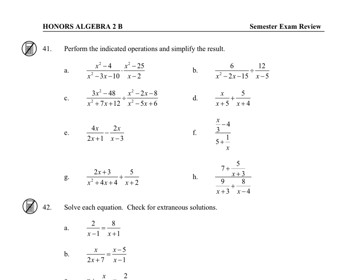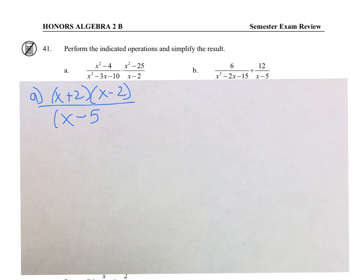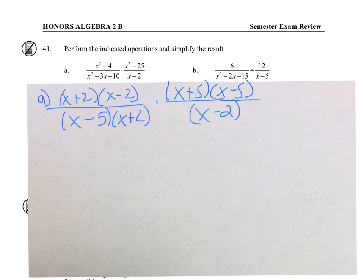So for problem 41, we have to factor. We'll start factoring every numerator and denominator for A. Now that everything is factored, we can find factors divided by themselves, which equal 1. So X minus 2 over X minus 2 is 1, X plus 2 over X plus 2, and X minus 5 over X minus 5. We're left with X plus 5 as our answer.